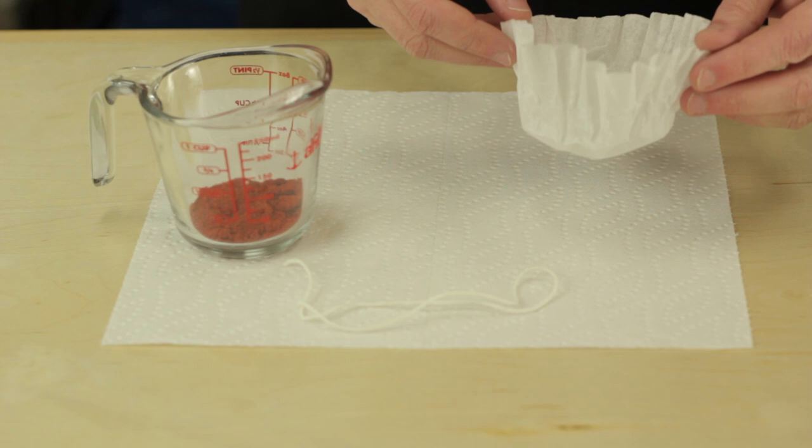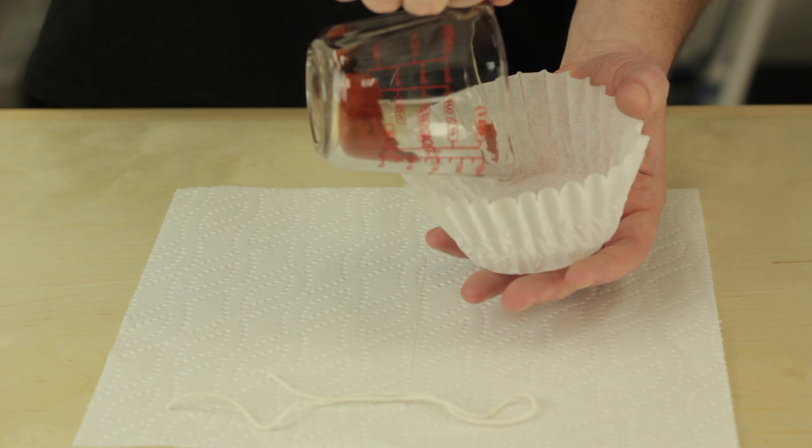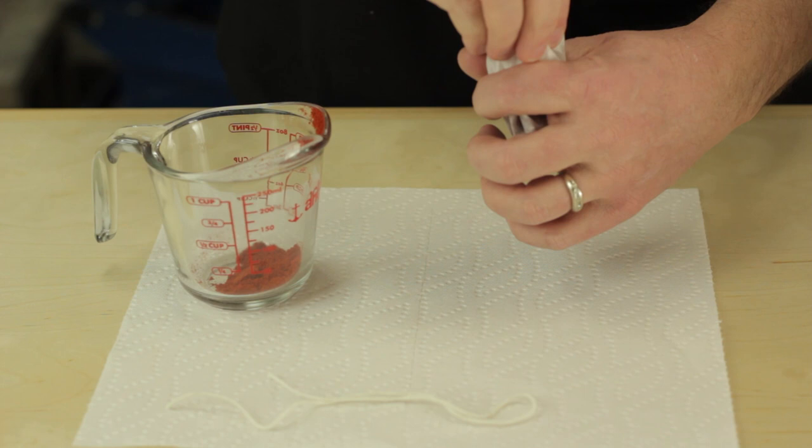Here I have a coffee filter, some paprika, and just a string. We're going to pour the paprika into the coffee filter, as I show you here, and we're going to tie it off with a piece of string and tie it nice and tight